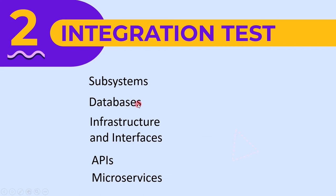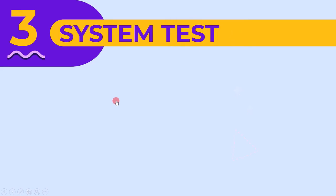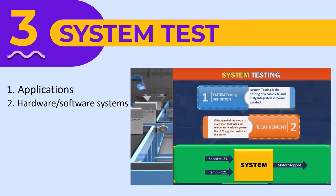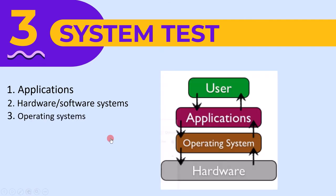These were the test objects of integration testing: subsystems, databases, infrastructure and interface, APIs, and microservices. Let's now move on to the test objects of system level. The first test object is applications, which can be hardware or software systems. During system testing, we get a complete application. The next test object is the operating system — to run any software application, we need an operating system which acts as a base. So the operating system is a test object for system testing.